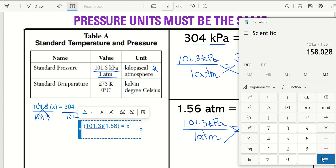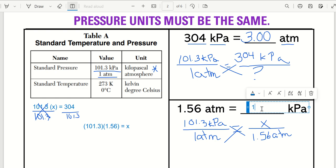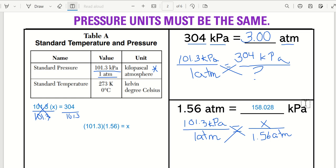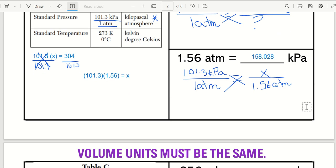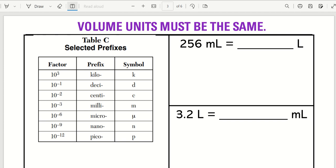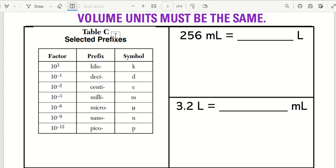And what do I get? Oh, look at that. 158.028. And I can just put 158. If you wanted to write the whole thing, 0.028, go ahead. That's well within your power to do that. Or I could round it to 158 based on this. That's how you do pressure conversions. That's really the only pressure conversions you need to do. You have to be able to convert between milliliters and liters.